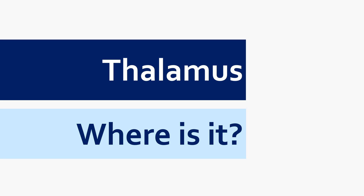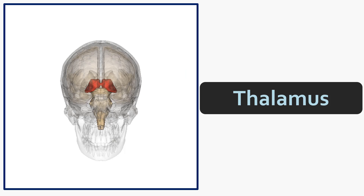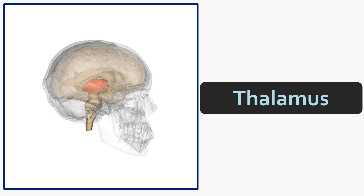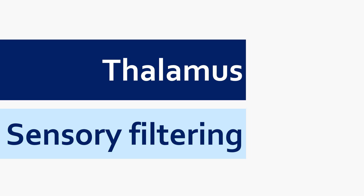Now on to the thalamus. The thalamus sits on top of those brainstem regions we talked about earlier, meaning in evolutionary terms it is a little bit more recent and its function is a little bit more complex. Very simplistically, what the thalamus does is filter out irrelevant sensory information. All sensory information from your skin and other sensory organs comes up the spinal cord through those brainstem regions and gets to the thalamus. The thalamus filters out the stuff that's not relevant and sends on to the cortex the stuff that is really important for whatever task you're doing at any one time.